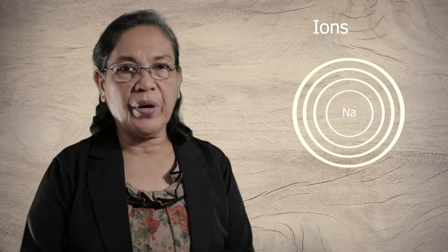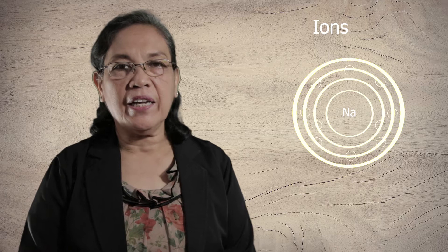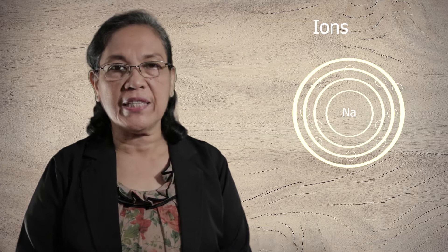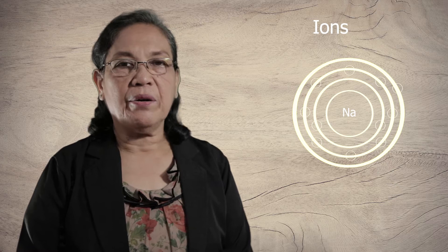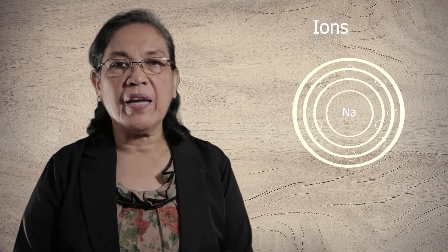Two of which are found in the first energy level, and eight electrons are found in the second energy level. When the sodium atom forms its ion, the outermost energy level electron, which is called the valence electron, when this electron is given up, the number of negative particles becomes 10.